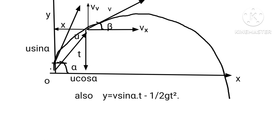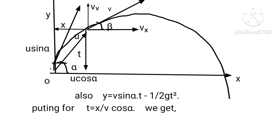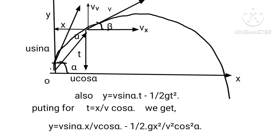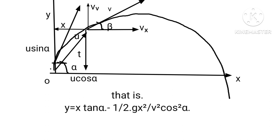Also, y equals V sin α · t minus (1/2)·g·t². Putting t equals x upon V cos α, we get y equals V sin α · (x / V cos α) minus (1/2)·g·(x / V cos α)². That is, y equals x tan α minus (1/2)·g·x² upon V² cos² α.